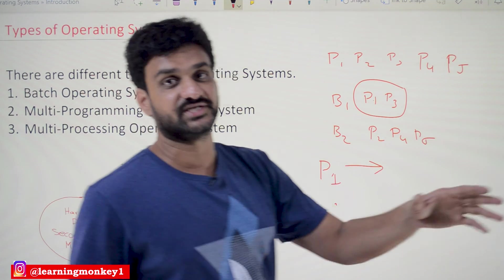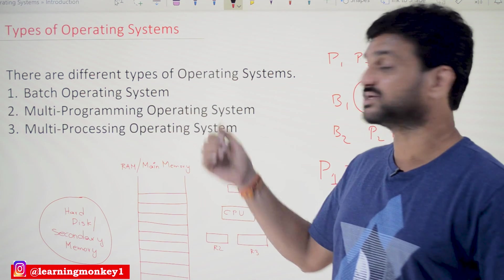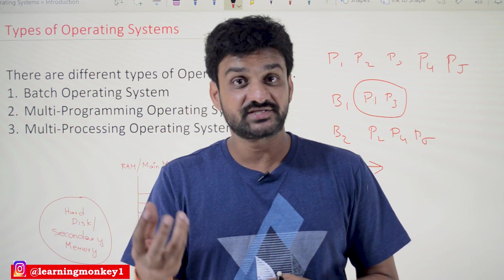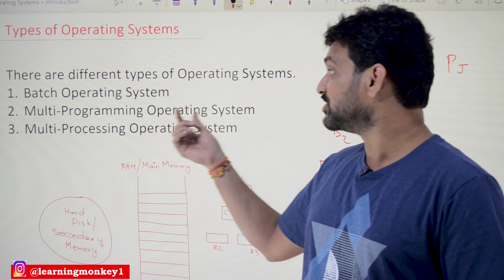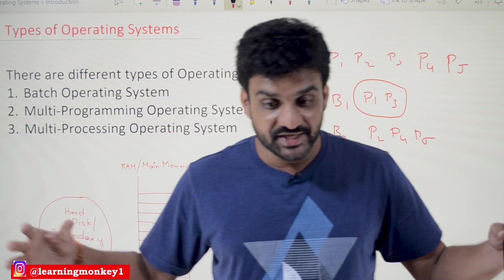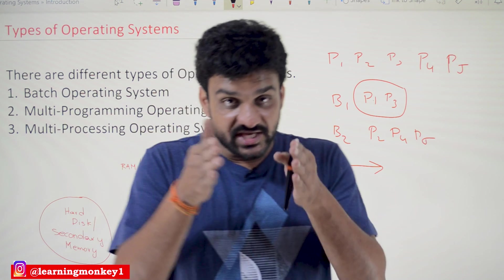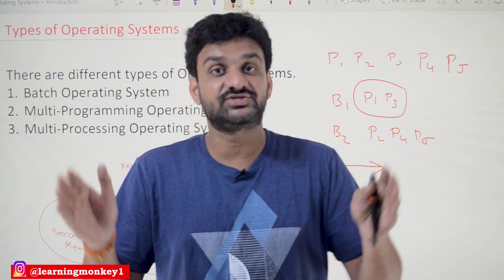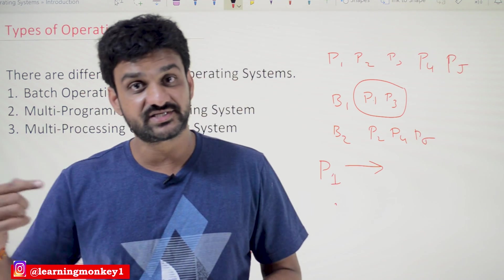The next type of operating system is the multi-programming operating system. These are very modern types of operating systems — the operating systems we use these days are multi-programming operating systems. The name itself states that multiple programs will get executed simultaneously; at a given point of time, multiple programs will get executed. That is what we call a multi-programming operating system.